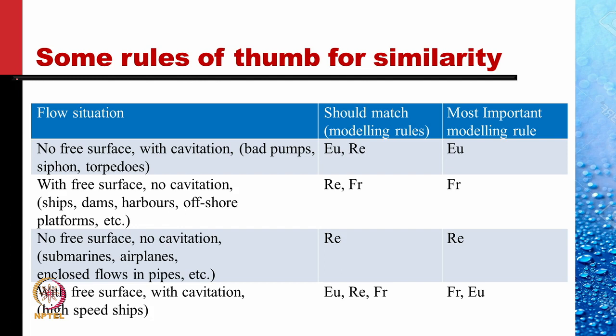In the last lecture, we developed some rules of thumb for similarity. We discussed that in flow situations with no free surface but with cavitation — which happens in badly designed pumps, siphons, and torpedoes — we should match the Euler number and Reynolds number. The dependence on Reynolds number is rather weak, so only the Euler number needs to be matched in most cases.